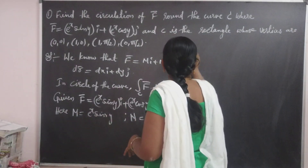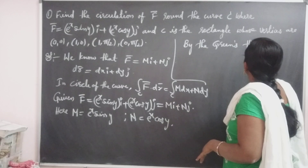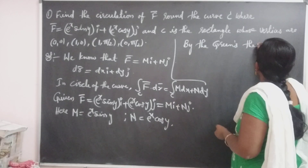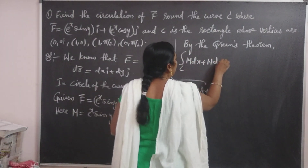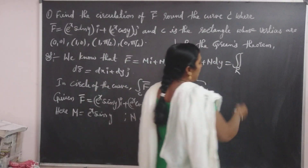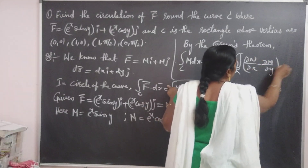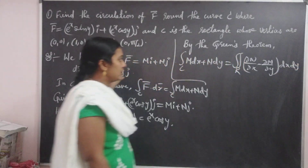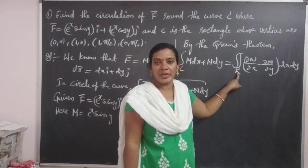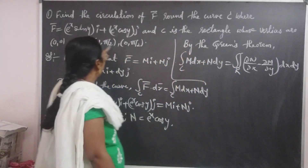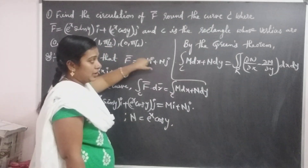By using Green's Theorem, we know that the integral over C of M dx plus N dy is equal to the double integral over region R of (∂N/∂x minus ∂M/∂y) dx dy. The line integral over C of M dx plus N dy is bounded in region R, so we are using Green's Theorem. In Green's Theorem, we have the limits 0 to 1 for x, and 0 to π/2 for y.